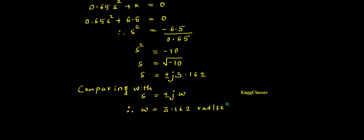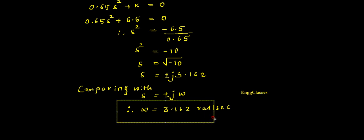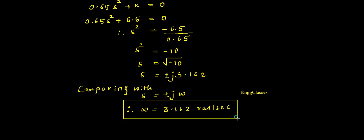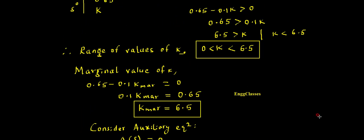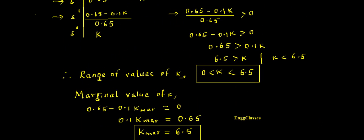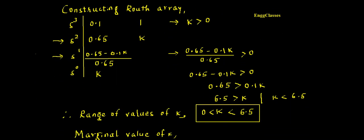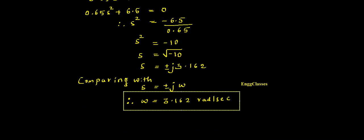So the frequency of oscillations ω = 3.162 radians per second. In this numerical, I have solved all three parameters step by step. I hope you have understood. If there are any doubts, please let me know in the comment section. Thank you so much for watching.